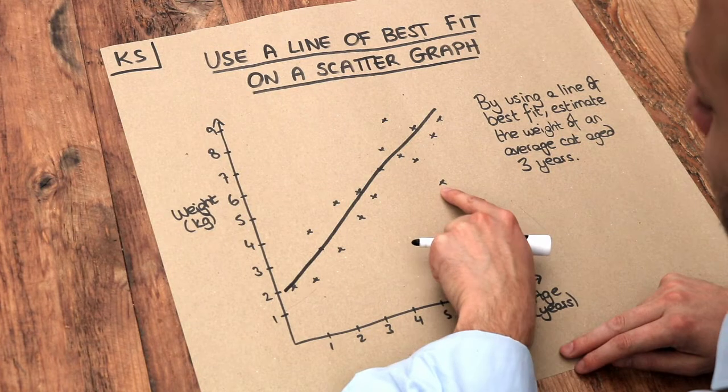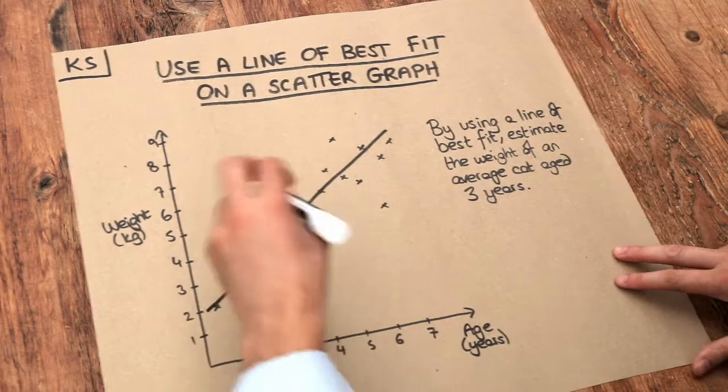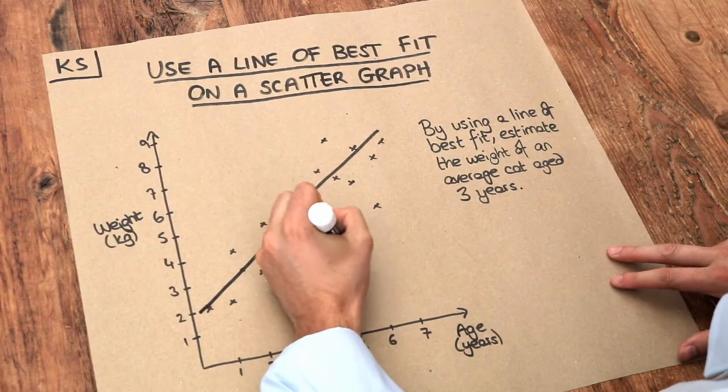You might have the odd outlier—that's okay—but this is kind of going through the sort of center of your data, and this is known as a line of best fit.